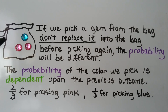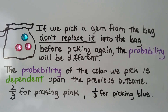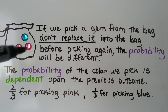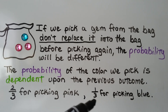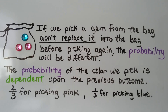Here we have our bag of gems again. There are two pink ones and a blue one in the bag. If we pick a gem from the bag and don't replace it before picking again, the probability will be different. The probability of the color we pick is dependent upon the previous outcome. We have two out of three chances of getting a pink one, and a one-third chance of getting the blue one.